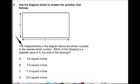Then it gives us this question. The measurements in the diagram above are shown rounded to the nearest whole number. Which of the following is a possible value of A, the area of the rectangle? And it gives us answer choices: 5.0 square inches, 5.5 square inches, 11.5 square inches, 12.0 square inches.